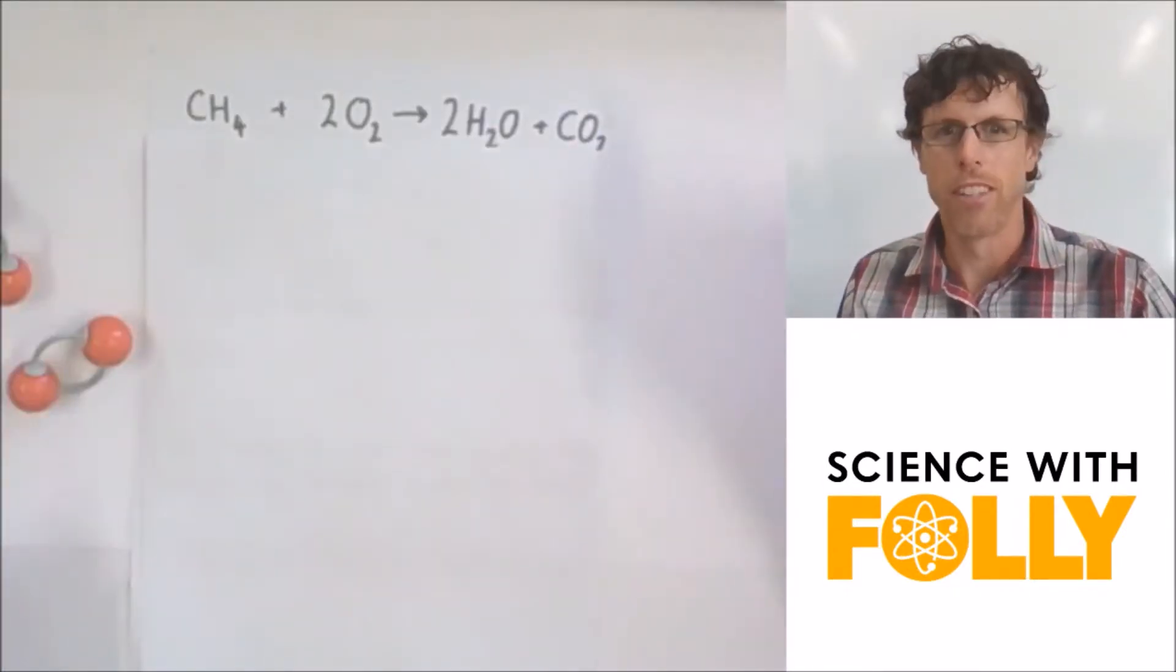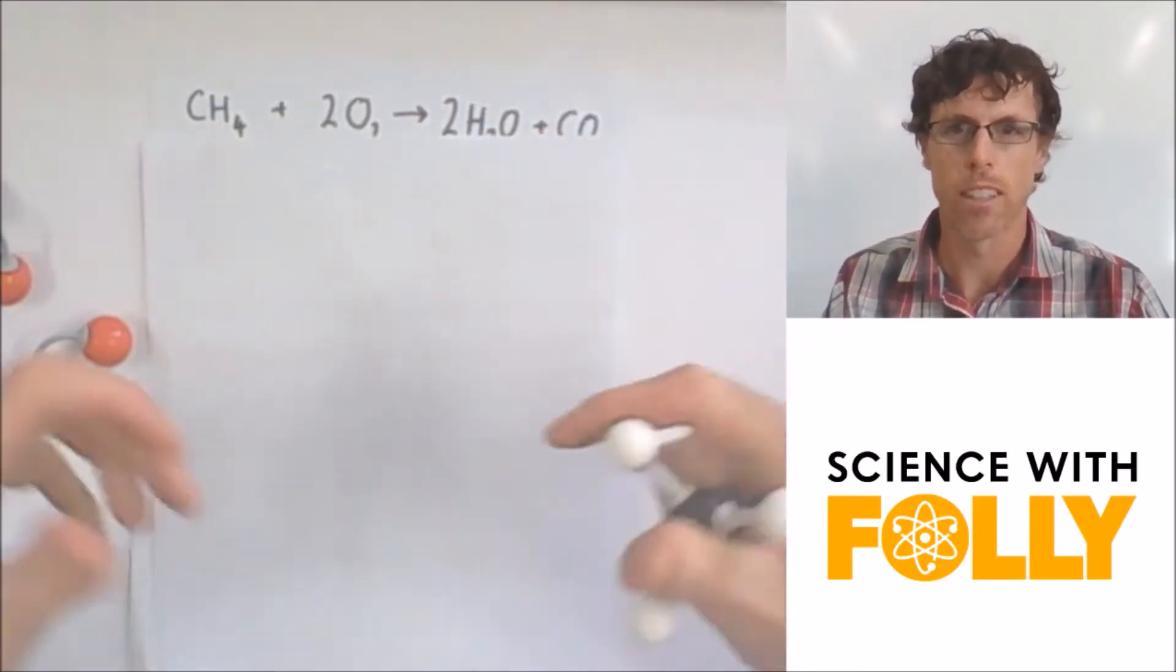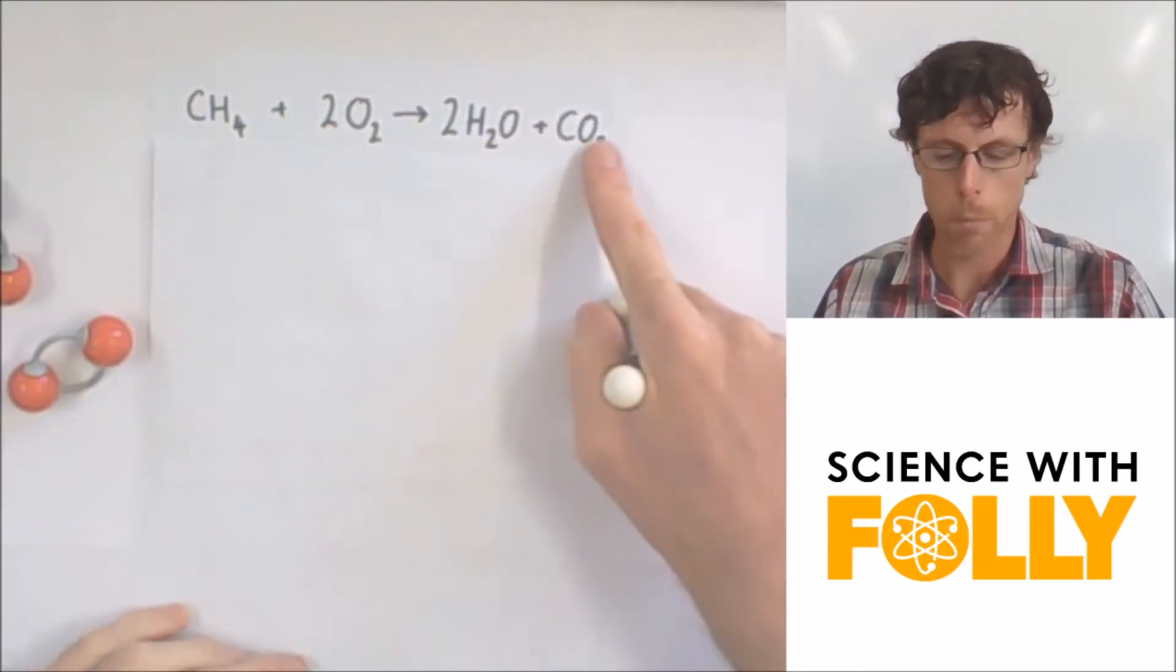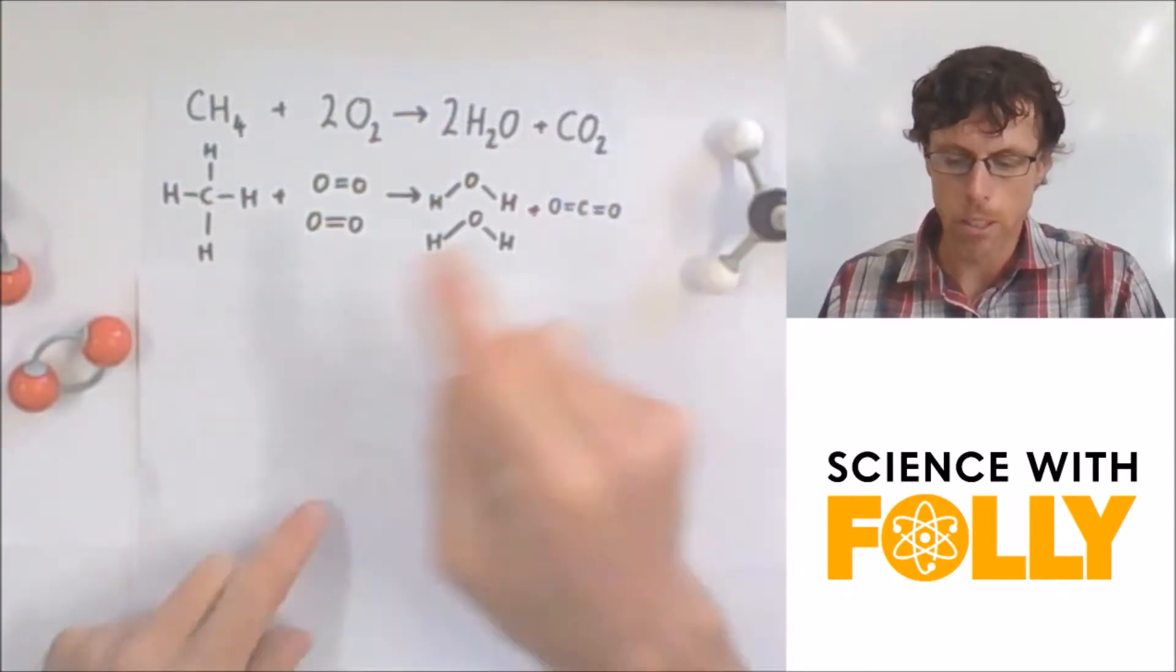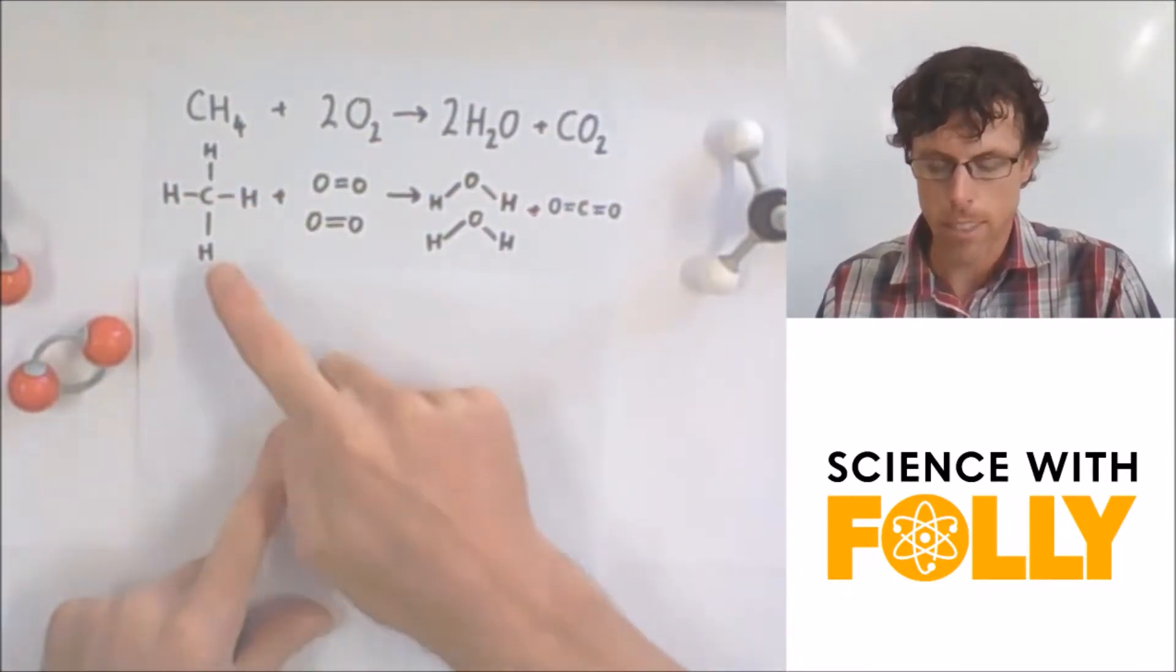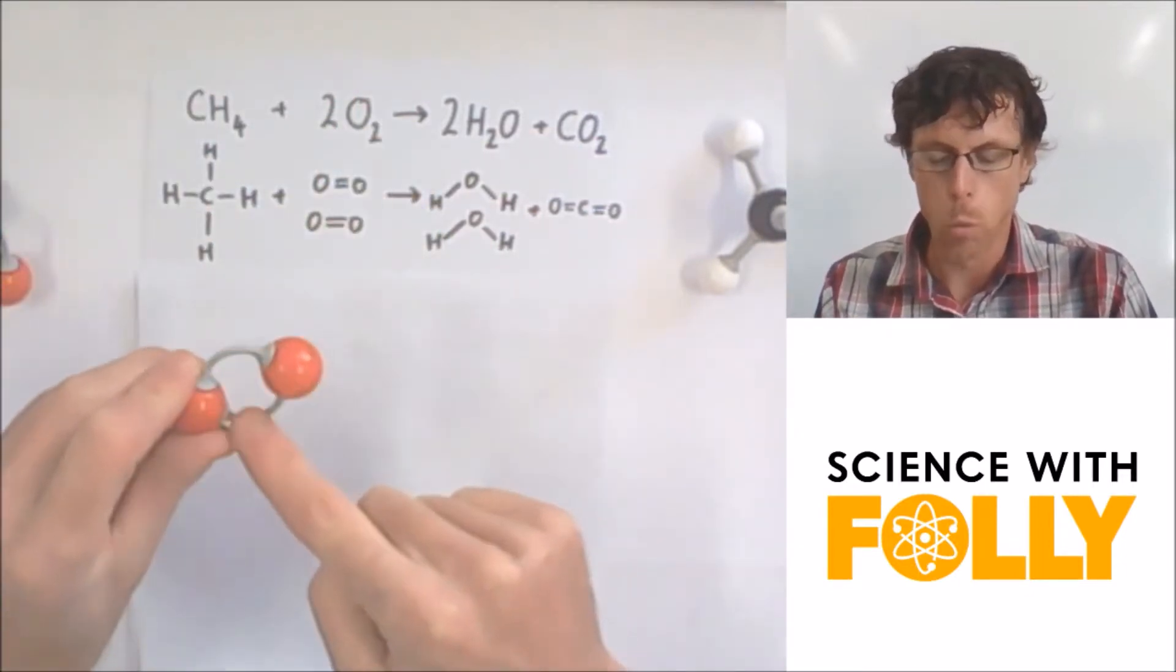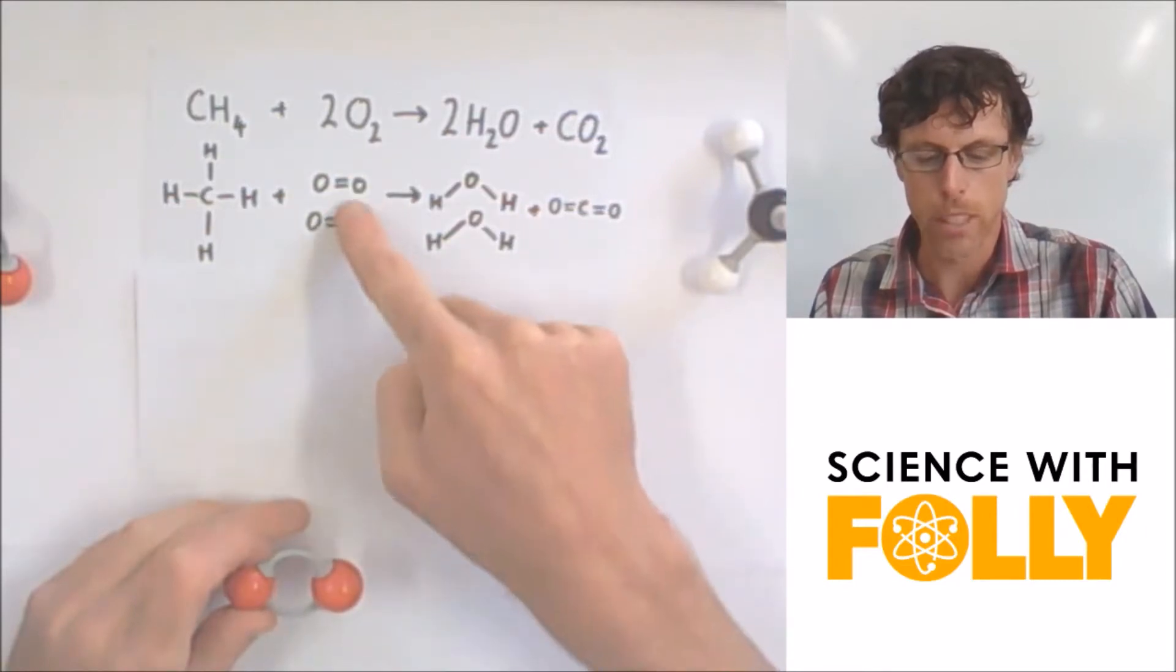And now we're up to the fun stuff. This is where we're looking at energy changes for a whole chemical equation. So I've got methane plus oxygen gives us water plus carbon dioxide. If you look at methane, here's my methane molecule. It's got four C to H bonds, and oxygen, in this case, has got one O to O double bond, but because we've got two oxygens, we end up with two of those.